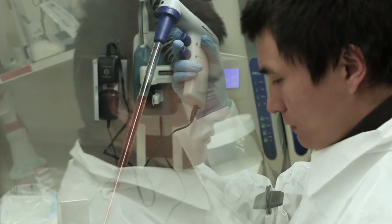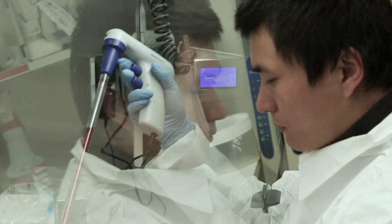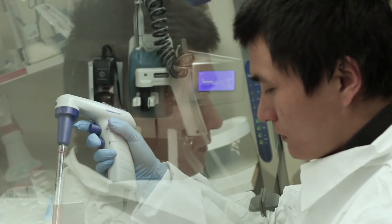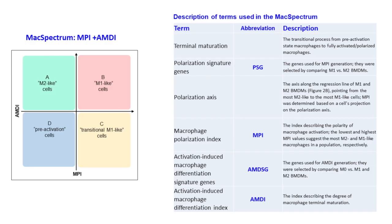Our strategy is to depict macrophage activation states along two dimensions: macrophage polarization, indicating how inflamed they are, and activation-induced macrophage differentiation, or terminal modulation, suggesting how activated they are. We then created two indices with original algorithms and termed them MPI and AMDI to depict these two dimensions, respectively.